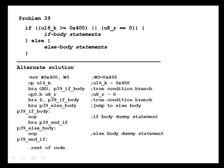An alternative solution uses a true condition branch for the last test: branch on zero flag true to the if body. If that branch is not taken, neither condition was true, so an unconditional jump goes to the else body. This alternative requires one more branch instruction than the previous solution.